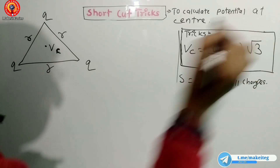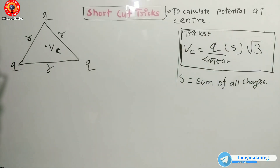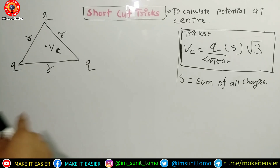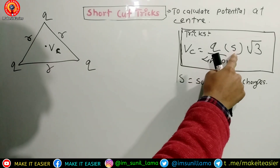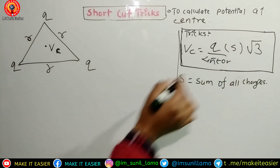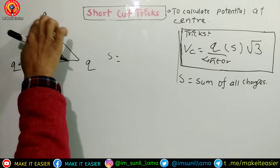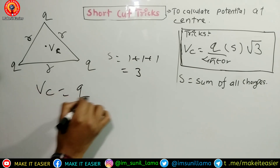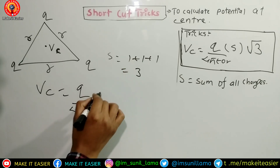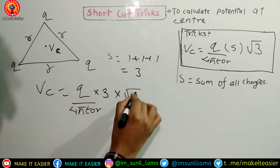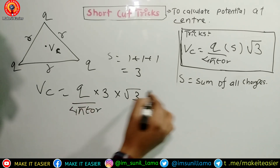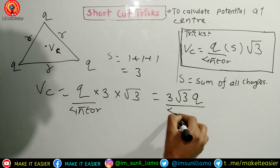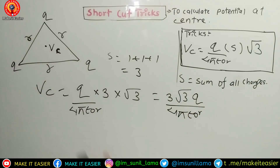Simply the factor is root three. For the equilateral triangle, the distance from corner to center is r/√3. Sum of charges is one plus one plus one equals three. Three times root three gives us three root three, so the potential at the center of the triangle is 3√3·q/(4πε₀r).